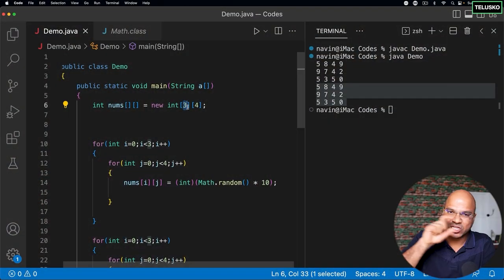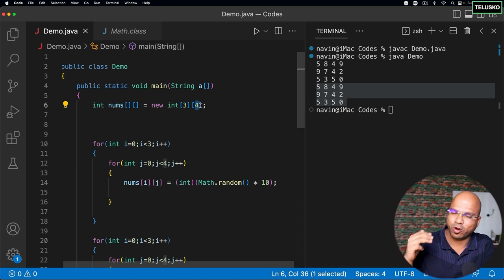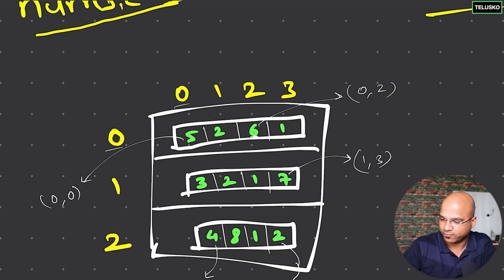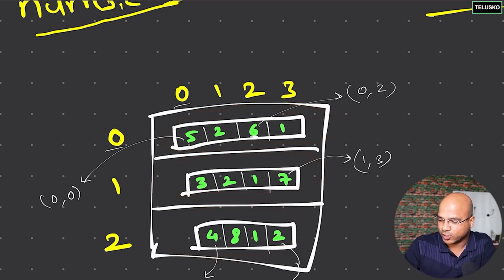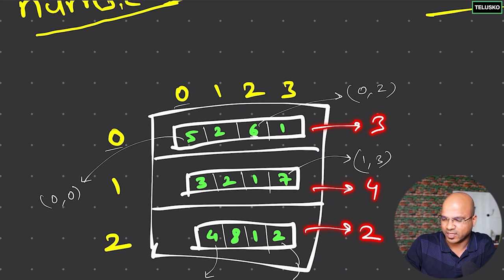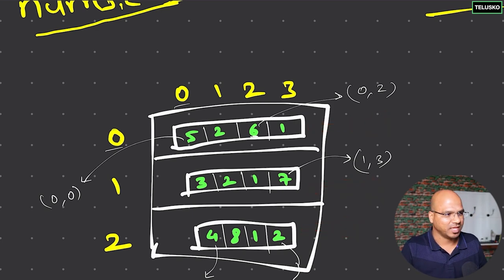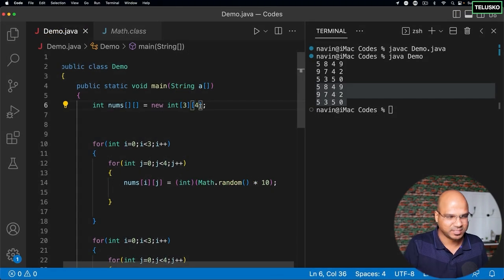We talked about multi-dimensional arrays where you specify the number of rows, and each inner array has the same size — for example, size 4. But what's the guarantee every row will have the same size? What if one array has size 3, another size 4, and another size 2? Can the internal arrays, or columns, have different sizes? Yes, it is possible — the column size is not fixed.